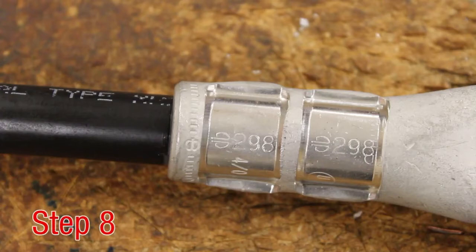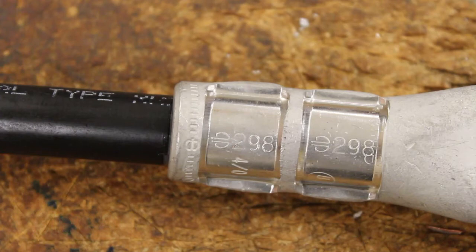Step 8. Ensure the correct number of crimps were made. Ensure the die index embossment matches the die index on the connector markings.